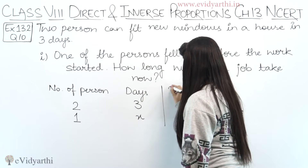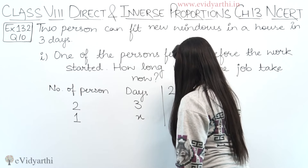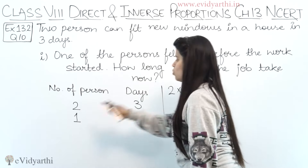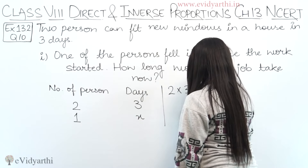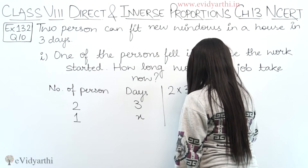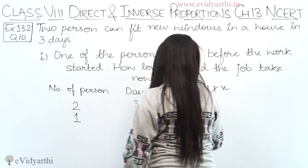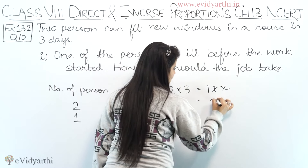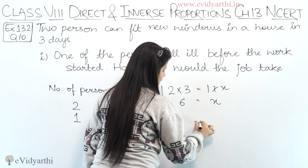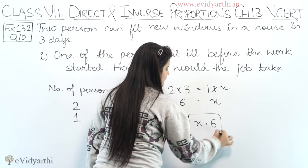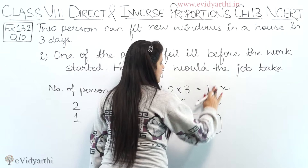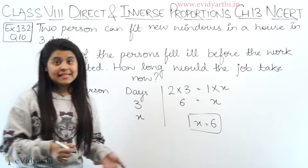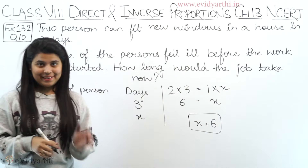We write: two into three equals one into x. So two times three is six, and one times x is x. Therefore x equals six. This means if one person will work on the job, then it will take six days.